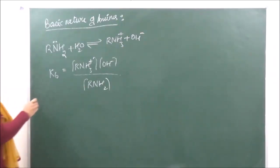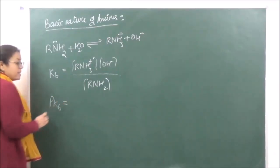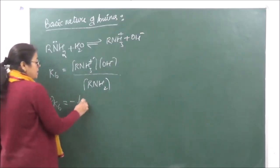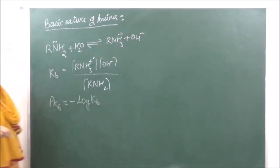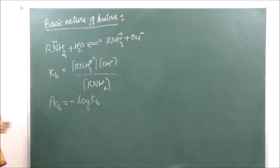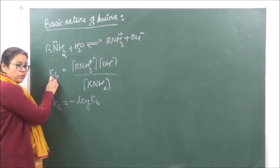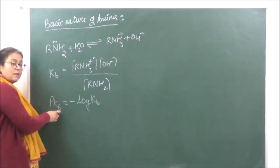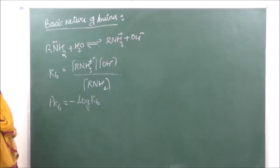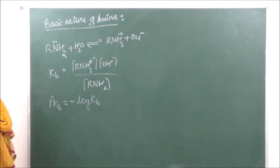Basic strength can also be expressed in terms of pKb values, where pKb equals minus log of Kb. A greater value of Kb means more basic character. Similarly, a lesser value of pKb means more basic, and a larger value of pKb means a weaker base — so smaller pKb means stronger base.